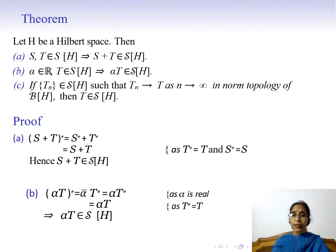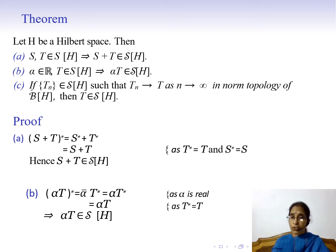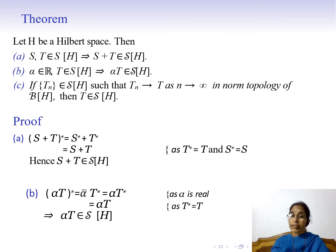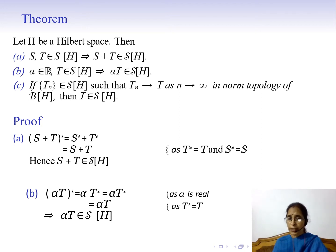The second theorem states: let H be a Hilbert space. Result A: if S and T are self-adjoint operators on H, then S + T is also self-adjoint on H. Result B: if α is a real number and T is self-adjoint on H, then αT is also self-adjoint on H. Result C: any sequence of self-adjoint operators on H that converges in norm converges to a self-adjoint operator on H.